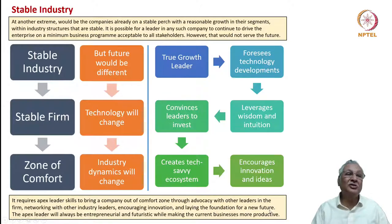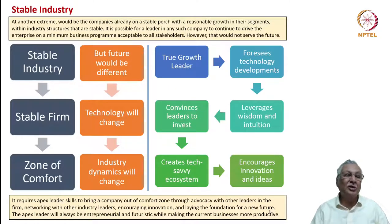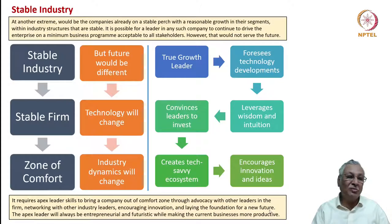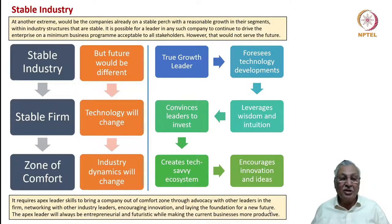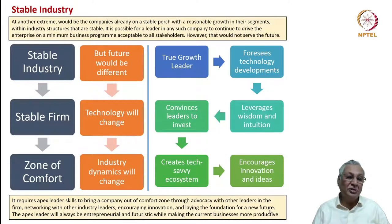A stable industry is one where the demand-production equation is well set, cost and price structures are well understood, and no destabilization is imminent. A stable industry has a zone of comfort, but people often fail to recognize that the future could be different — through startup actions or entrepreneurial companies, changes in technology can alter industry dynamics and put the industry at risk.